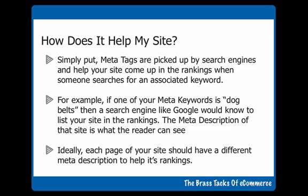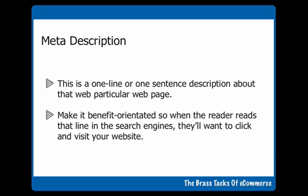So the meta description, or the meta keywords, are basically all keywords related to what your site is about. The description is basically a one or two sentence description of what your site is about. Ideally each page of your site should have a different meta description, although the keywords may be the same.